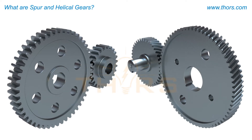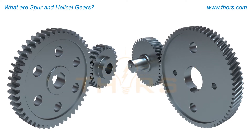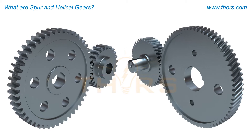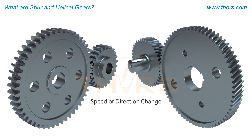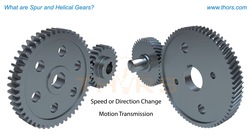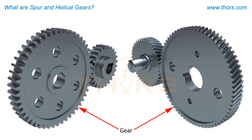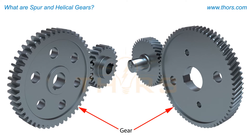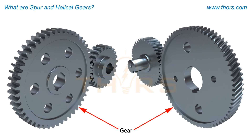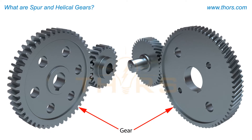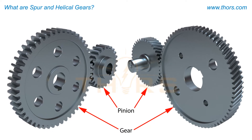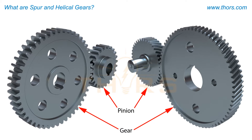A gear or pinion is a toothed mechanical component that meshes with another for changing speed or direction or to transmit motion. The term gear is specifically attributed to the member of a pair of tooth parts that has the greater number of teeth, while pinion refers to the member in the pair with the fewer number of teeth.